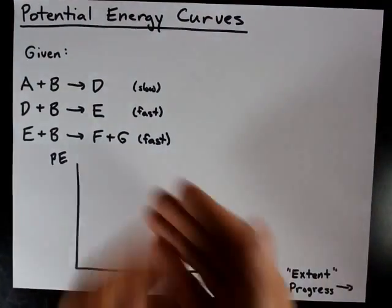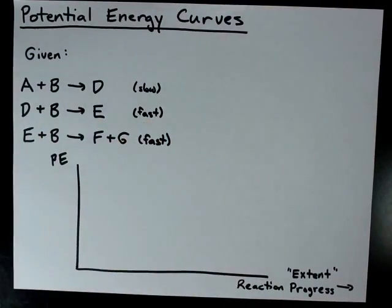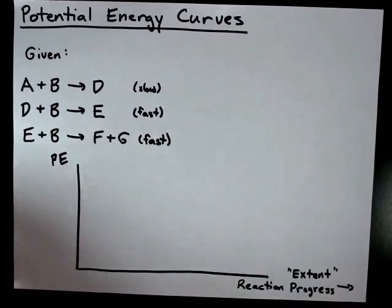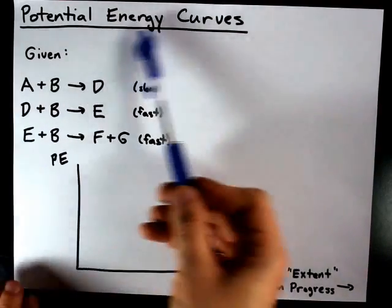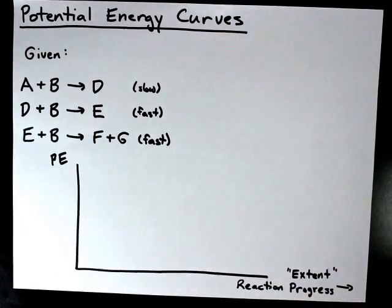Here is a mechanism that I invented between molecules that don't exist. The question is, how do we draw a potential energy curve that corresponds to this mechanism?